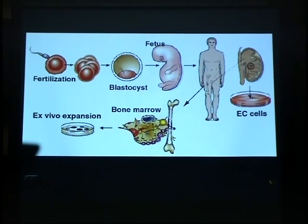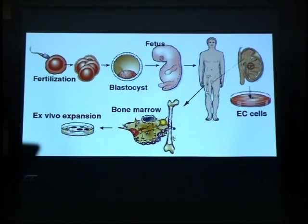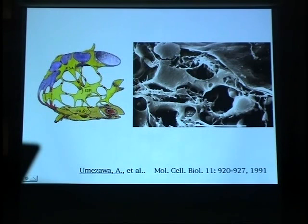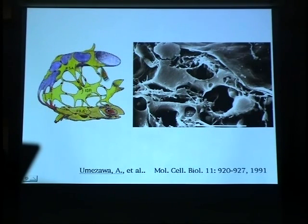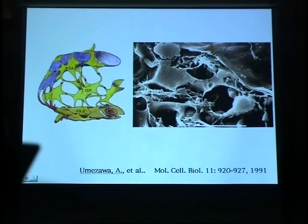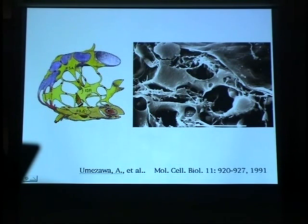Today I will talk about the availability of marrow stromal cells as a good source of cell therapy. Marrow stromal serves as a microenvironment or niche for hematopoietic cells. The scheme on the left-hand side shows morphology of marrow stromal, deduced from analysis of scanning electron microscope. Marrow stromal showed a reticular structure and connected each other via gap junction, shown in red.